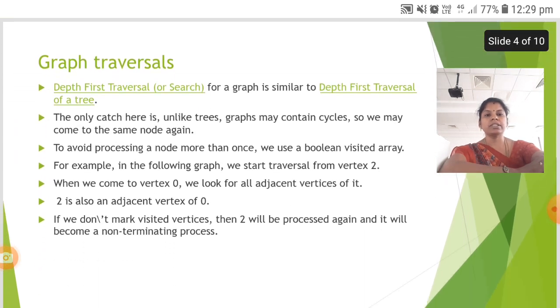Another method is the depth first traversal of a graph. For a graph it is similar to the depth first traversal of a tree. The only catch here is unlike trees, graphs may contain cycles so we may have to come to the same node again. To avoid processing a node more than once, we use a Boolean visited array.